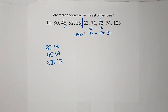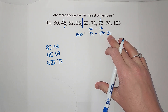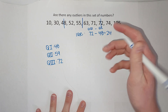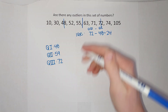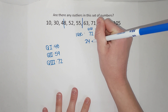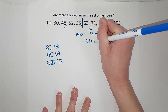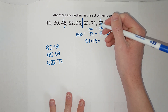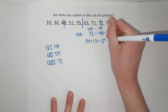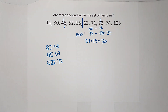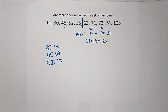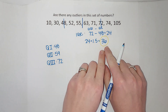Now, what do you do with that? We take our interquartile range and we multiply it by 1.5. So 24 times 1.5 gives me 36. This number is going to help us figure out what the outliers are.